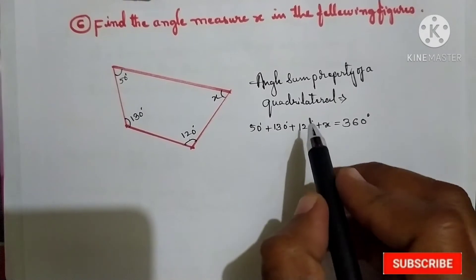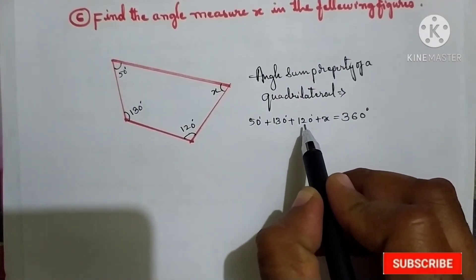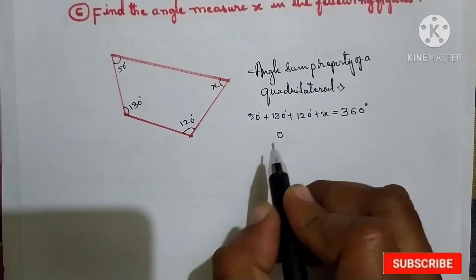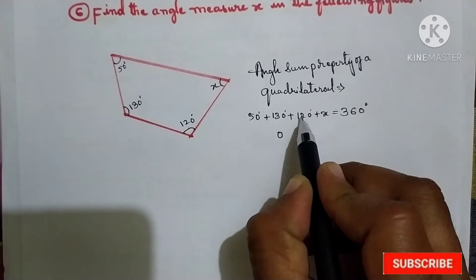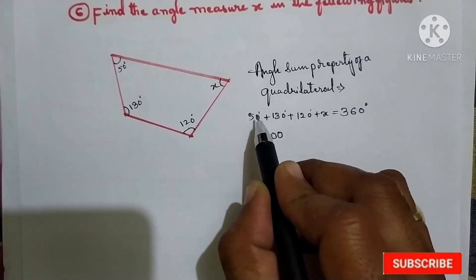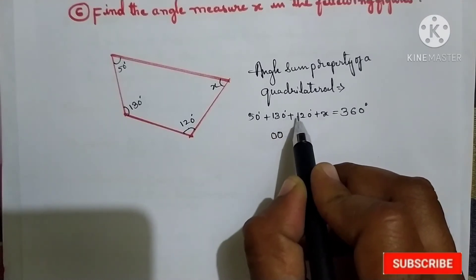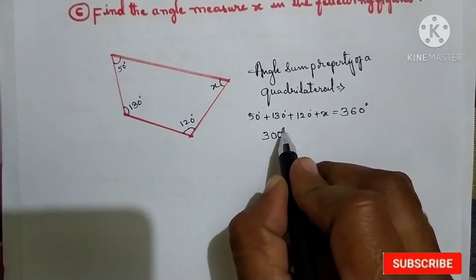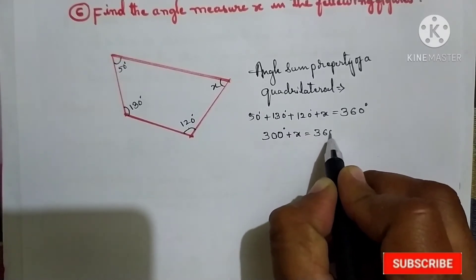Now you should add all of these — 50, 130, and 120. So 3 plus 2 is 5, 5 plus 5 is 10, carry 1; 1 plus 1 plus 2 is 4 — wait, that gives us 300. That means 300 degrees plus x is equal to 360 degrees.